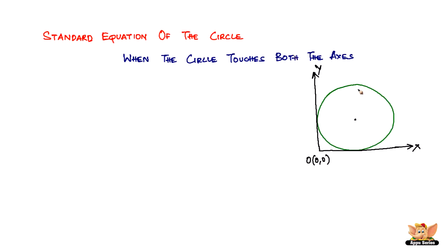What happens to a circle when it touches both the axes at the same time? You can see that this circle is touching both axes at the same time. The central fixed point is here and the moving point is touching the y-axis at one point and also touching the x-axis. You also know that the distance between the moving point and the center of the circle is a. So in this case, the coordinates of C, which is usually (h, k), have become (a, a). Both h and k have become equal to a.